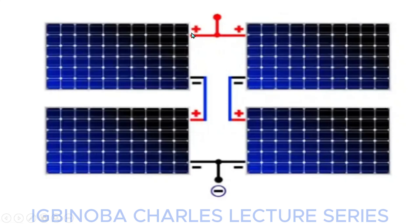So we have one set of panels connected in series and another set connected in series — two sets in total. When you join the positive of the first set to the positive of the second set, and connect the negative of the first set to the negative of the second set, these two sets are now connected in parallel. That is why it is referred to as series-parallel: you first connect the panels in series, then connect each series set in parallel.